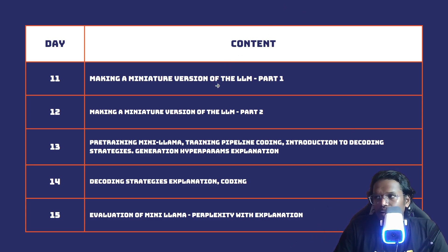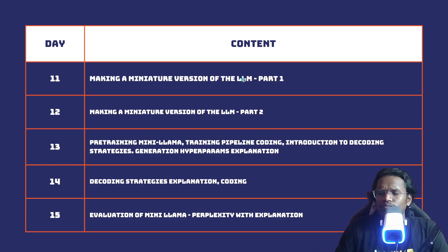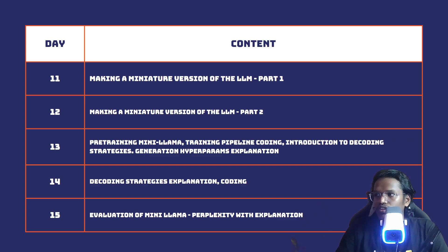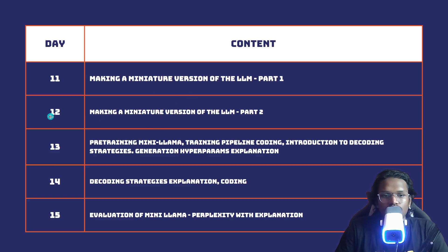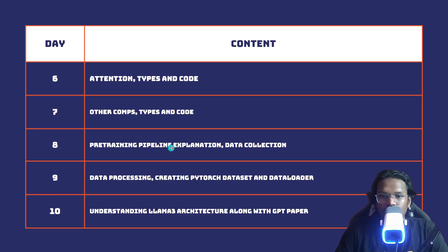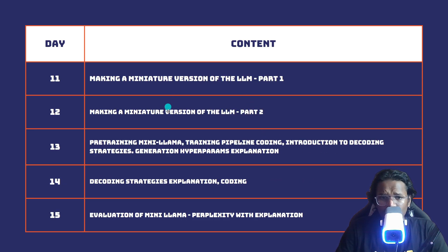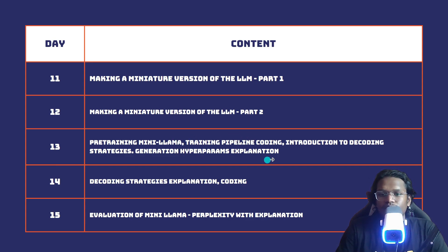In day eleven we'll build a miniature version of LLaMA 3, which we studied in day ten. It'll be split into part one and part two since it's a large undertaking — it will be live coding. In day thirteen, once the LLM is ready, we'll code the pre-training pipeline and then pre-train the model.